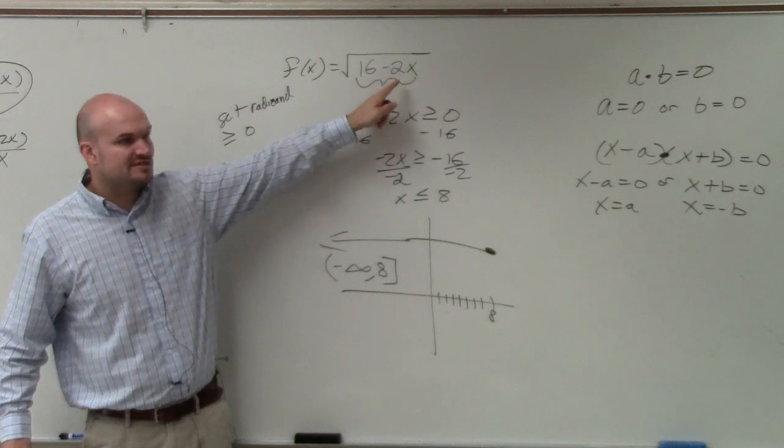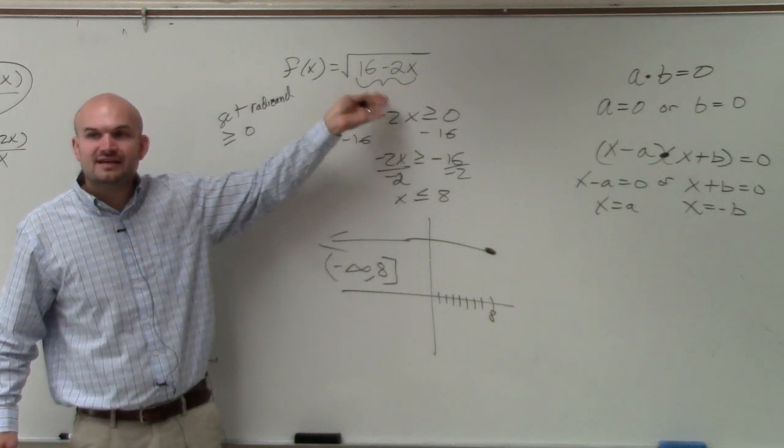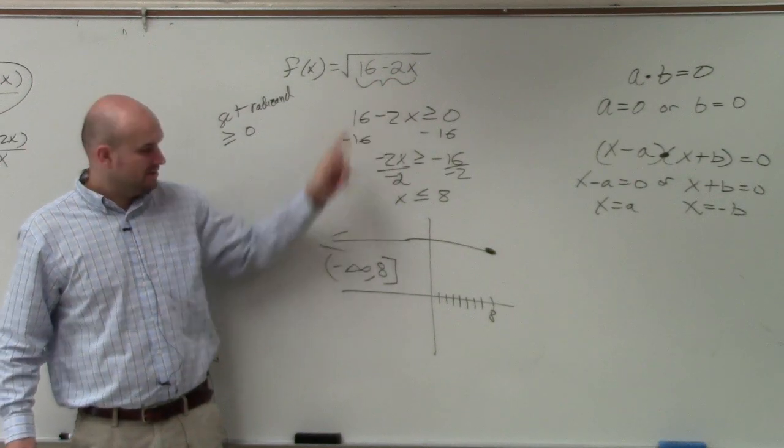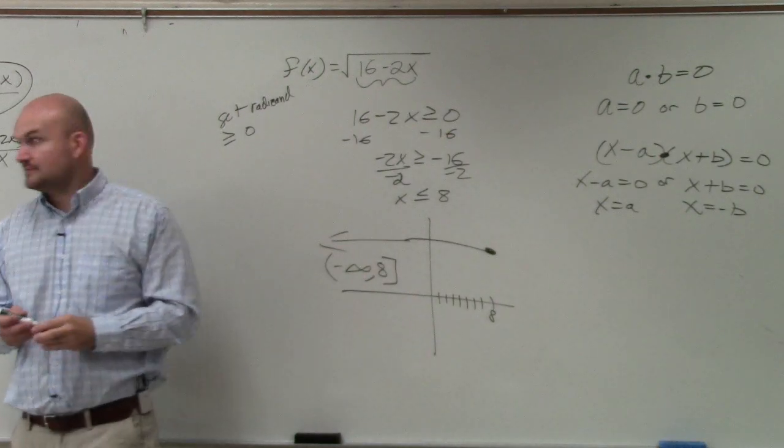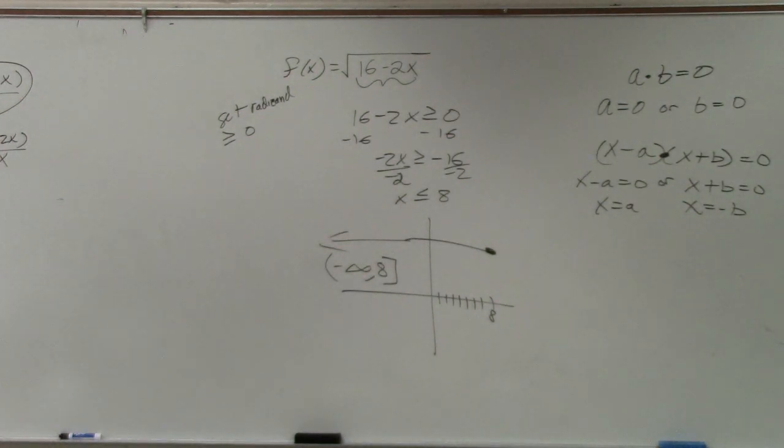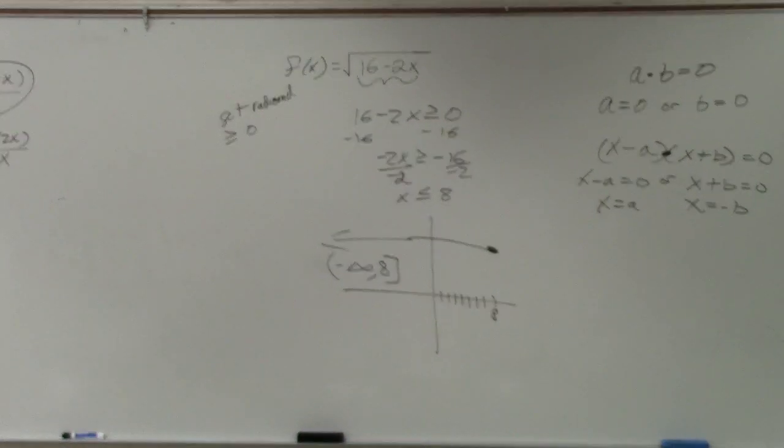It can equal 8. You can have a square root 0. We just can't have it negative. So that's your domain for that one. So why don't you guys just give a shot for those four examples? I'll just go over the answers here and just give you guys like a couple minutes.